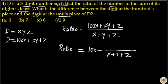So, 100X minus 0X equals 100X, and 100Y minus 90Y equals 10Y. Similarly, 100Z minus 99Z equals Z. This means the remaining term equals 90Y plus 99Z divided by X plus Y plus Z, and this term is the same as before.